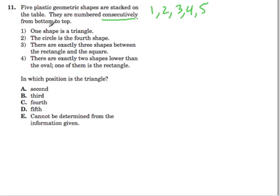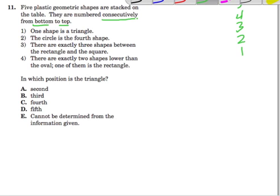And they're numbered from bottom to top. So I'm going to rewrite my numbers right here from bottom to top: 1, 2, 3, 4, 5. If they had said from top to bottom, it would be the other way. But they did say from bottom to top. So we have the numbers 1 through 5, numbered consecutively from bottom to top.